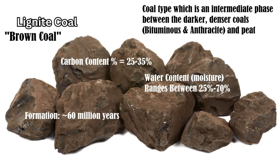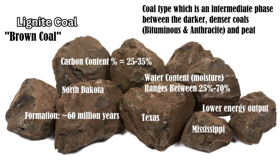The water content of lignite can range, based on location, between 25 up to 70 percent. It's a younger coal, taking less time to form — around 60 million years — and it's found across the states in areas like North Dakota, Texas, and Mississippi. This coal has a lower energy output, and as you go up the rank to higher carbon content, you get a higher energy output.